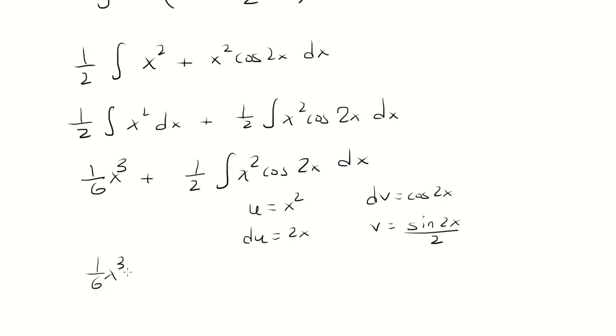So we'll rewrite everything. You want to make sure to have the 1 half outside multiplying everything else. So it's uv, which is x squared sine 2x over 2, minus integral v du. The twos will cancel. So it's x times sine 2x.